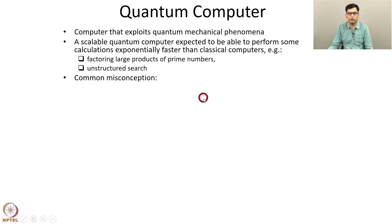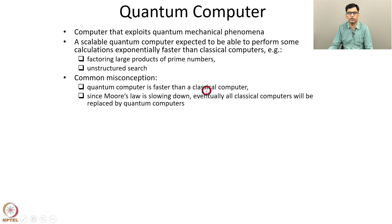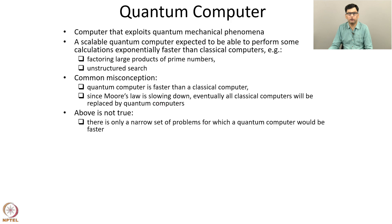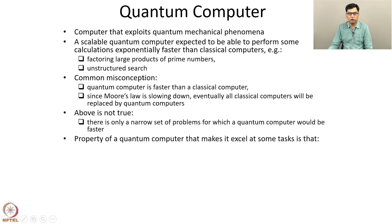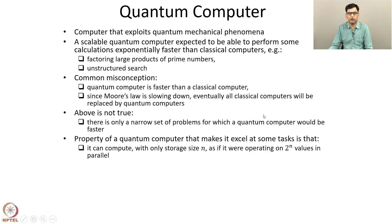One common misconception is that a quantum computer is faster than a classical computer for all tasks, and since Moore's law is slowing down, eventually all classical computers will be replaced by quantum computers. But this is not true. There is only a narrow set of problems for which a quantum computer would be faster. The property of a quantum computer that makes it excel at some tasks is that it can compute with only storage size n as if it was operating on 2 to the power n values in parallel.